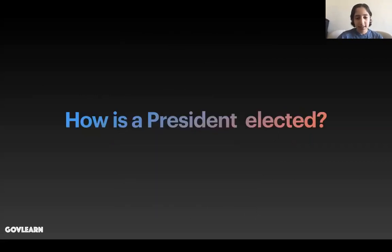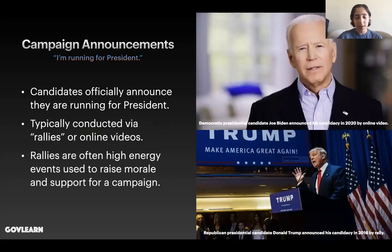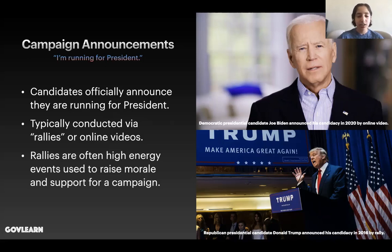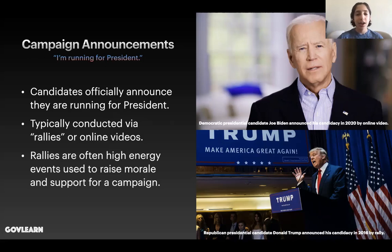Let's talk about how a president is elected and the timeline of that. First, candidates would announce that they're running for president. These announcements are typically conducted via rallies or online videos. In 2016, Hillary Clinton announced her candidacy via online video, but Republican candidate Donald Trump announced his candidacy via rally. Rallies are often high-energy events used to raise morale and support for a campaign. You'd see large crowds at stadiums, and you'd have the candidate speak about the issues, bring guest speakers and people who support their campaign on stage, and engage the audience to raise support. Democratic presidential candidate Joe Biden in 2020 also announced his candidacy via online video, and you also see the image of Donald Trump announcing his candidacy via campaign rally in 2016.